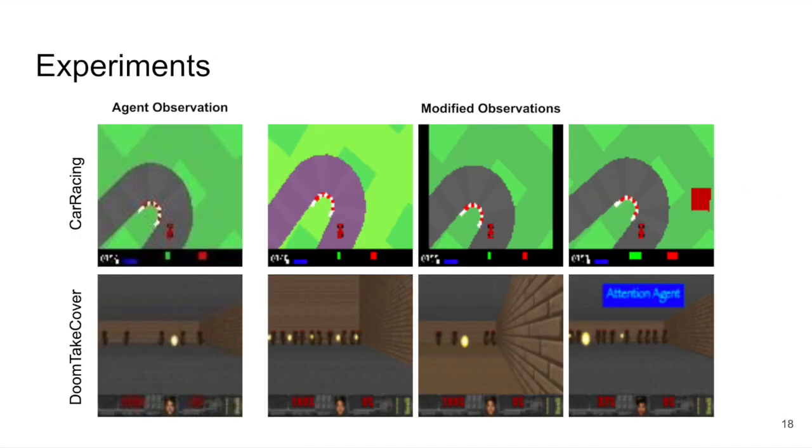To demonstrate that attention agent is able to solve vision-based tasks and to study its properties, we evaluate the agent in two challenging tasks with visual inputs: car racing and doom takeover. The leftmost column in the figure gives snapshots of the two environments. To study how the self-attention information bottleneck affects the agent's ability to generalize to unseen environments, we also evaluate our agent in the modified car racing and doom takeover environments without retraining. Sample images of the modified environments are given on the right.